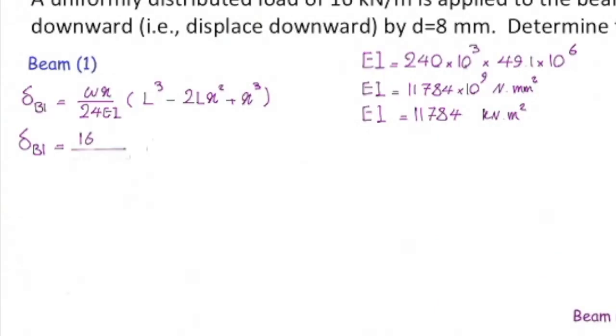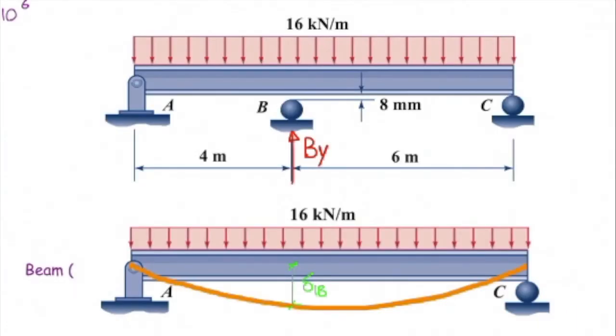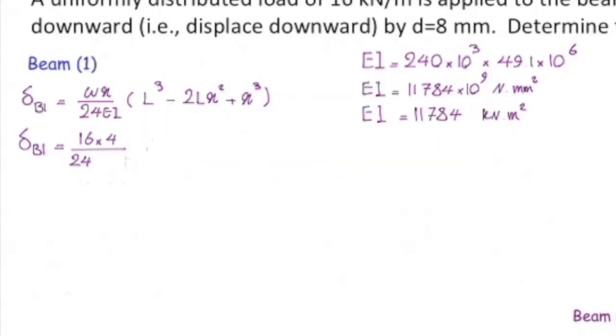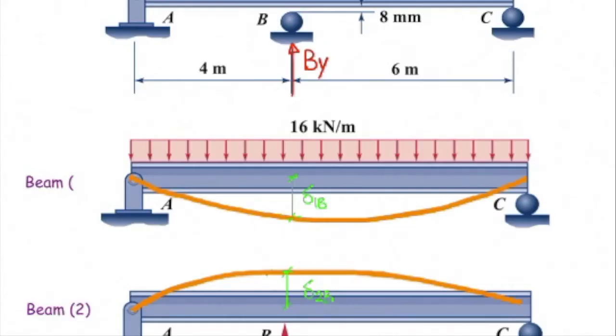W is 16 kilonewton over meter. X is distance of point B to the left support which in this case is 4 meter and EI is 11,784 kilonewton meter squared. L is the length of the entire beam which is 10 meter and I plug the values of L and X in the remaining part of that equation and that gives me delta B1 equal to 0.1684 meter. So that is deflection in beam number one because of the given load.